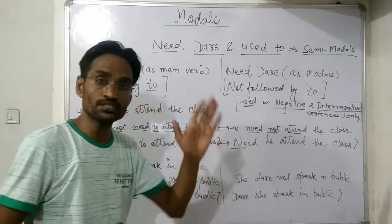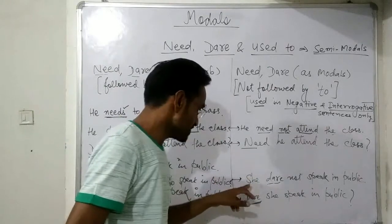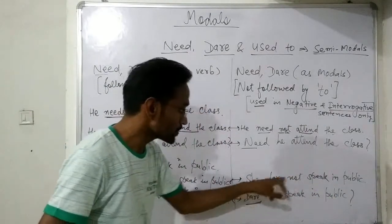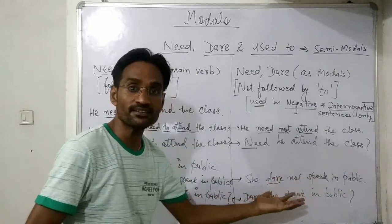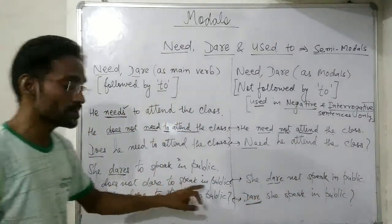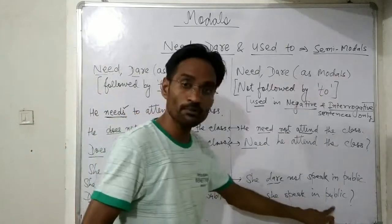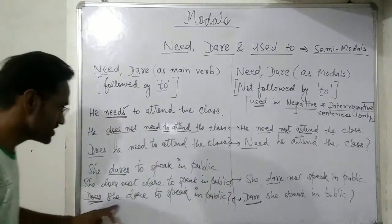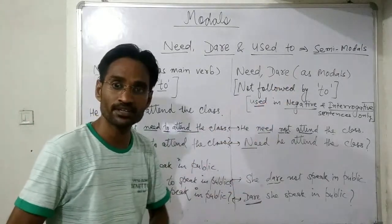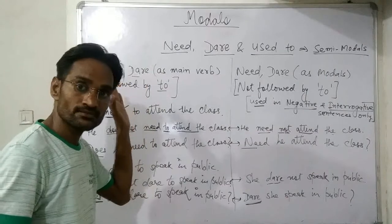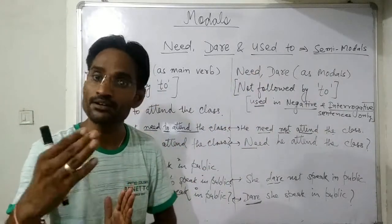Need, when used as a modal, is used in negative and interrogative sentences. Similarly, dare as a modal: 'She dare not speak in public.' When need and dare are used as main verbs, they are followed by 'to' plus the first form of the verb, whereas when need and dare are used as modals, they are simply followed by the first form of the verb.